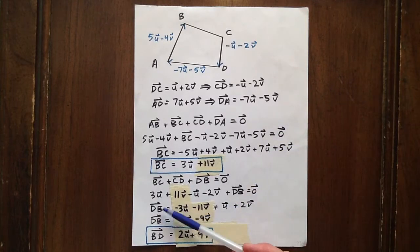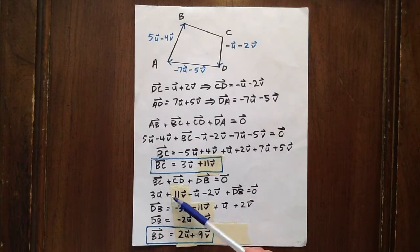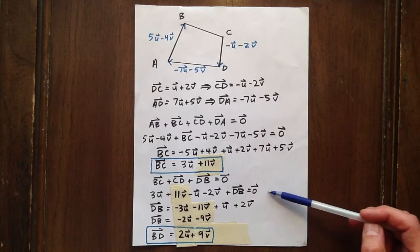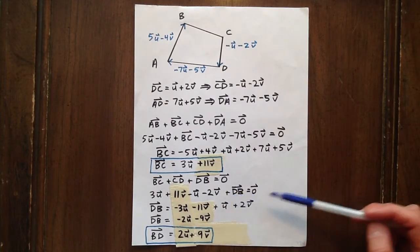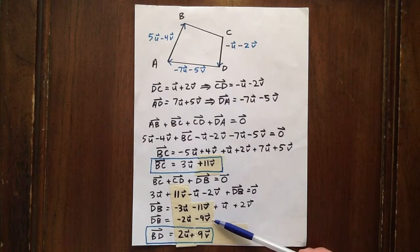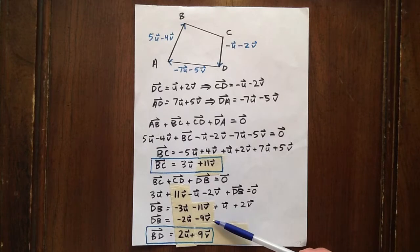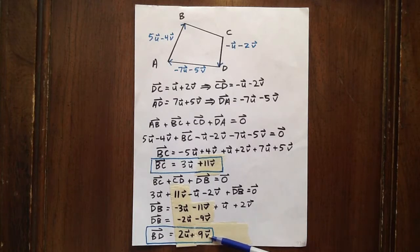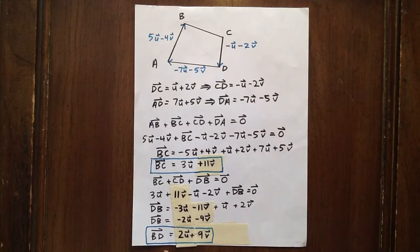And so leaving DB on the left hand side and bringing other vectors through addition and subtraction on the right hand side and collecting like terms, we see DB equals negative 2U minus 9V. And so we can take the opposite vector BD, multiply through by negative 1, and say that BD equals 2U plus 9V.